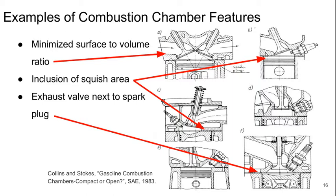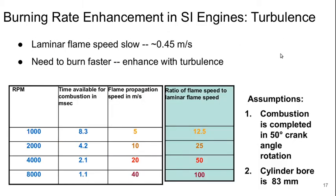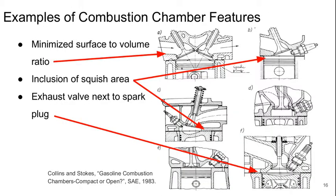The squish area we see in examples B and C here. These are designs where when the piston moves all the way up, the gas is forced into a region with less than the cross-sectional area of the piston. There's a little side chamber that the flow gets squished into — compressed into a region between the valve and the spark plug. And here's an example of putting the exhaust valve right next to the spark plug.